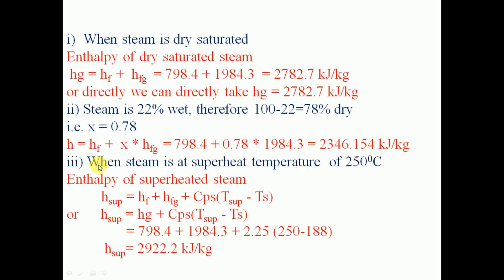In the third case, the steam is superheated at a superheat temperature of 250 degree Celsius. The steam is raised from zero degree Celsius to saturation temperature, then to dry saturated steam, and then further heated up to the superheated temperature of 250 degree Celsius. The enthalpy of superheated steam is calculated as sensible heat plus latent heat plus the amount of heat required to raise from saturation temperature to the superheated temperature.